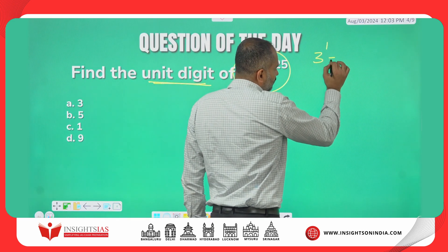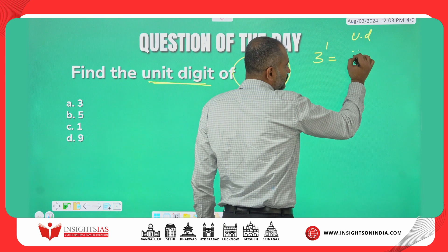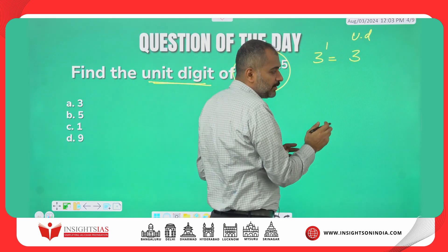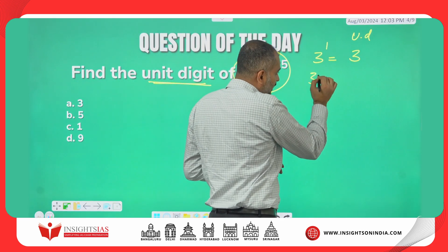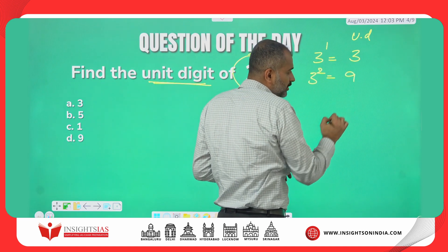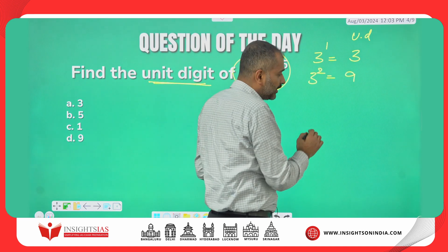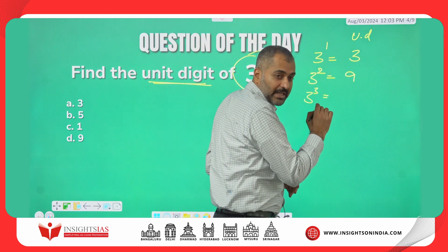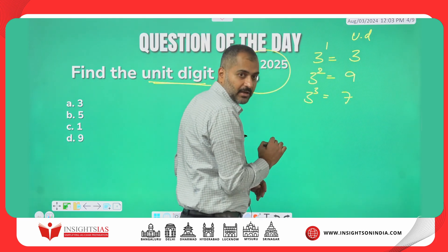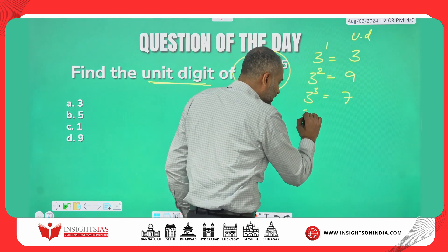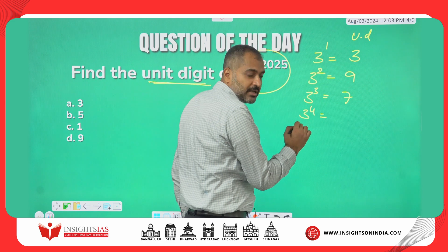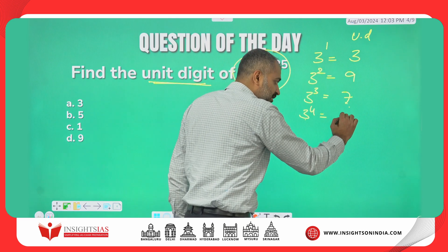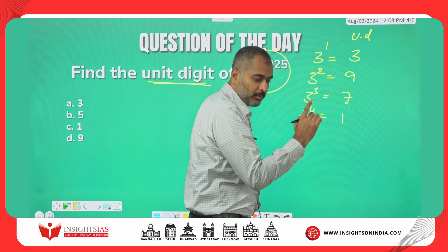Observe carefully. 3 power 1 — unit digit is 3. 3 squared — unit digit is 9, since 3 into 3 is 9. 3 cubed means 3 into 3 into 3 which is 27 — unit digit is 7. 3 power 4 — you multiply again by 3: 7 into 3 ends with 1, so unit digit is 1.